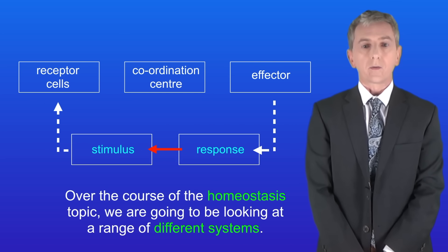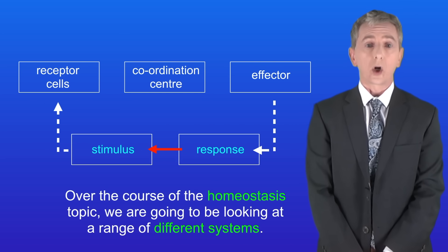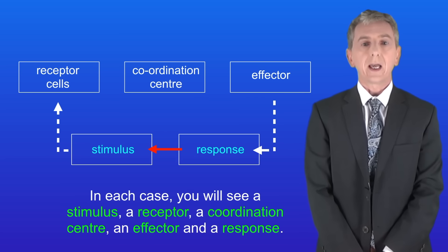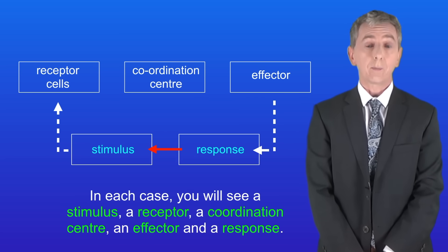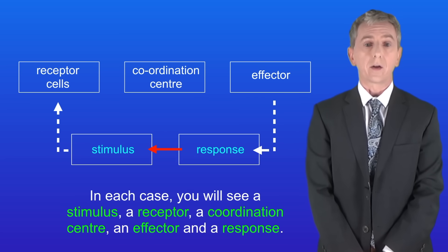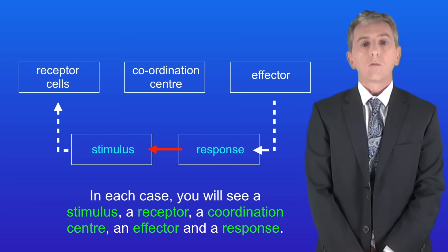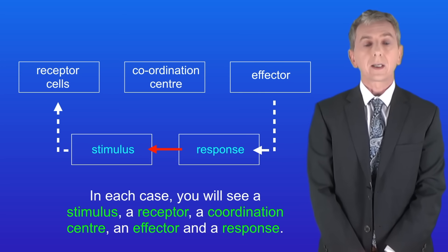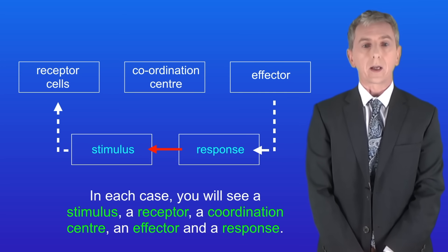Over the course of the homeostasis topic we're going to be looking at a range of different systems, but in each case you'll see a stimulus, a receptor, a coordination centre, an effector, and a response. Remember, you'll find plenty of questions on homeostasis in my revision workbook, and you can get that by clicking on the link above.